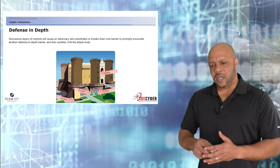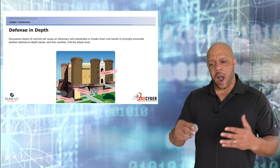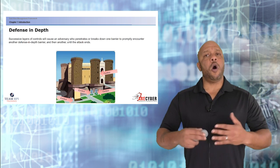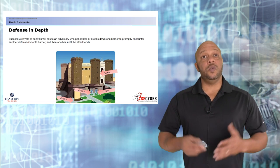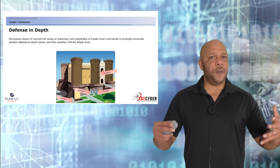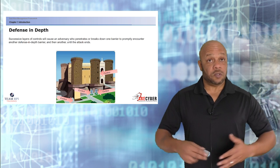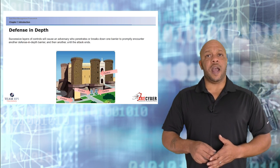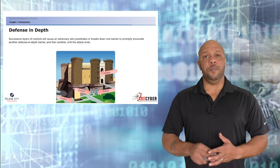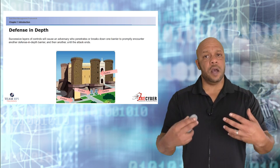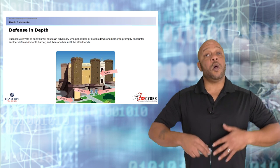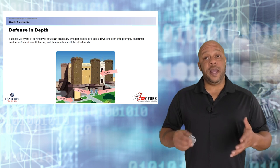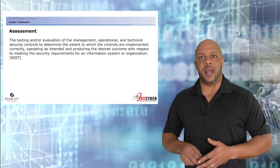So why these families and why do we consider these controls to be comprehensive? Well, it all points back to defense in depth. In basic terms, it's the successive layers that cause adversaries to have to break through one barrier and then immediately another and another, until hopefully they've exhausted their resources and we have still protected the core asset.